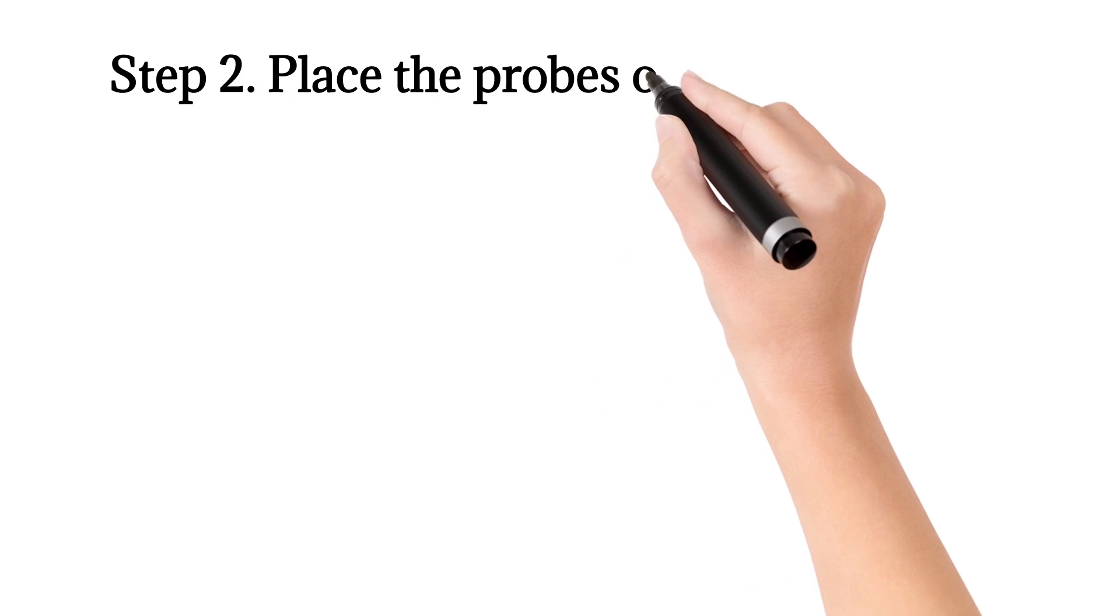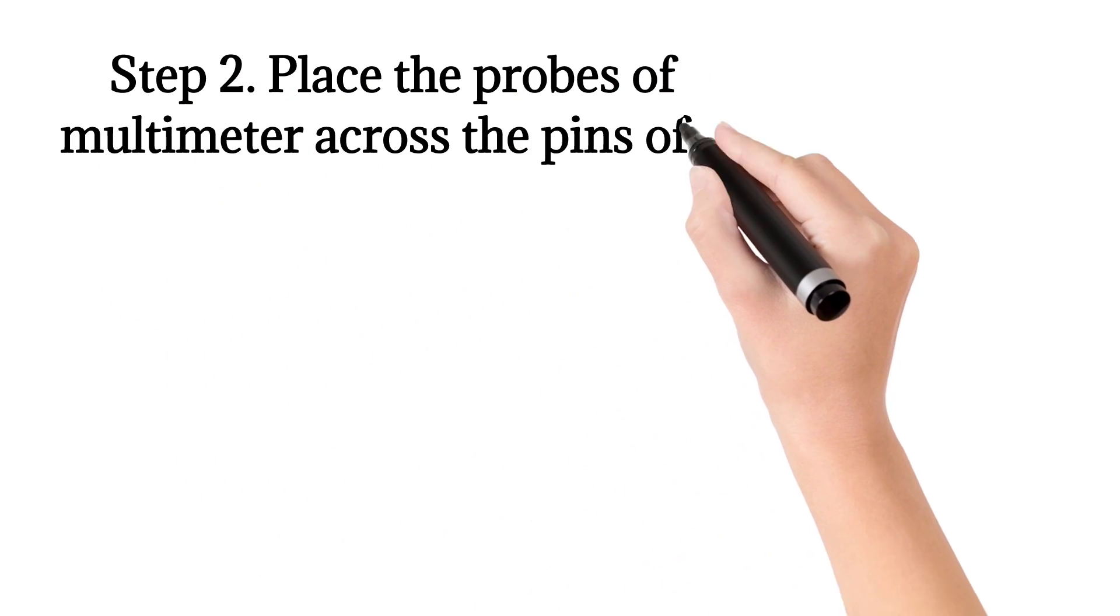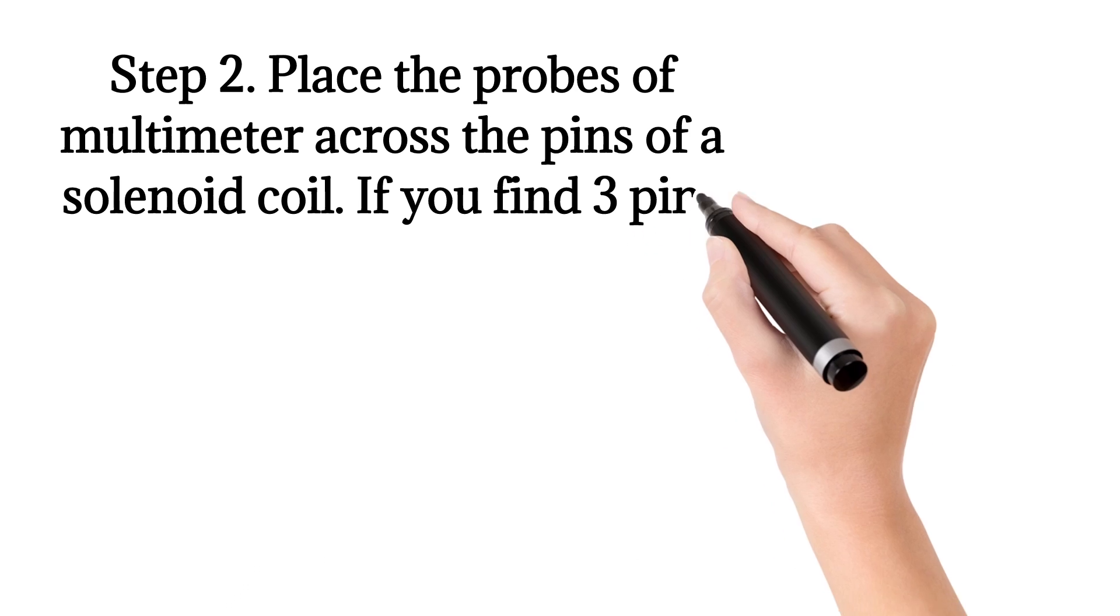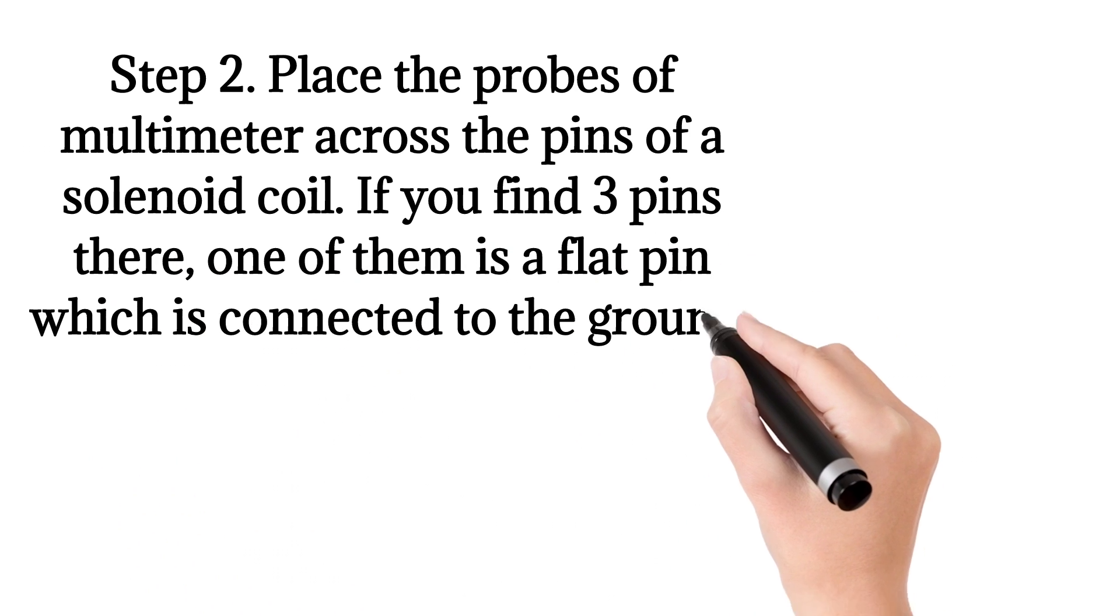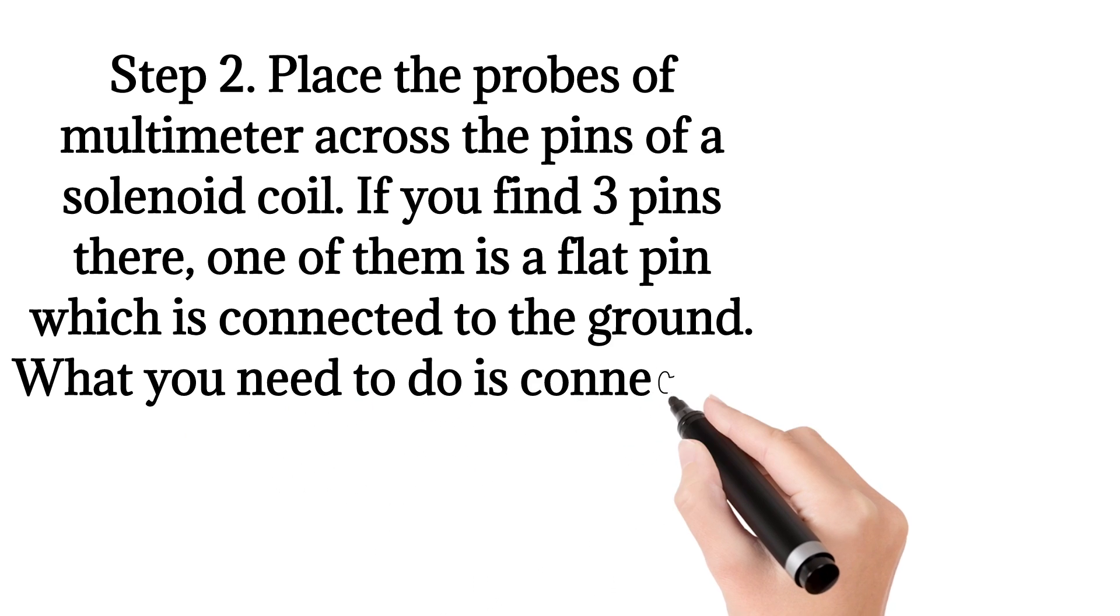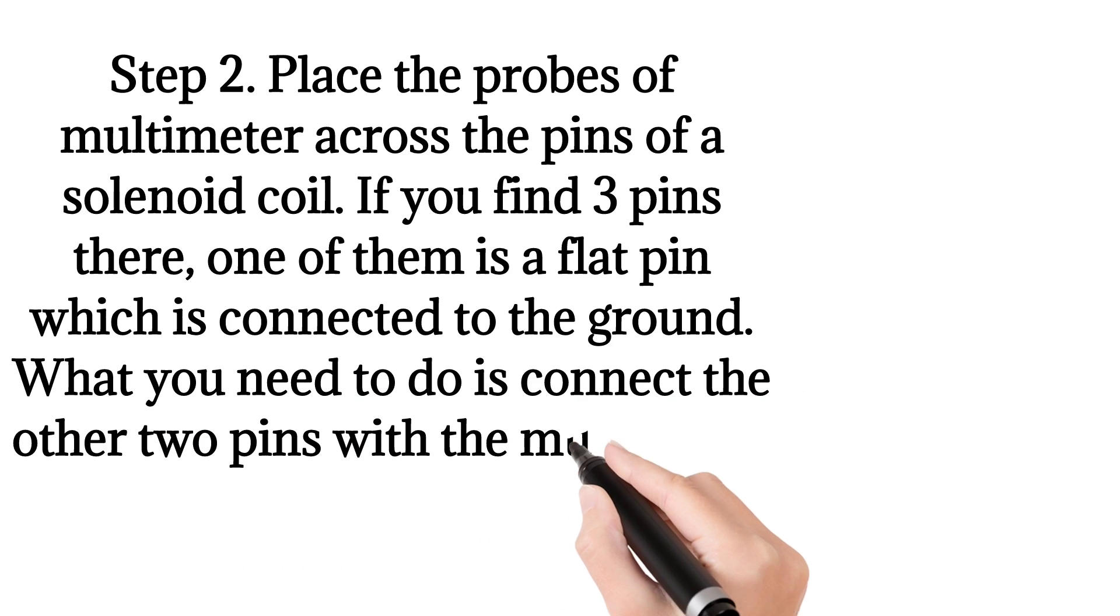Step two: Place the probes of multimeter across the pins of a solenoid coil. If you find three pins there, one of them is a flat pin which is connected to the ground. What you need to do is connect the other two pins with the multimeter.